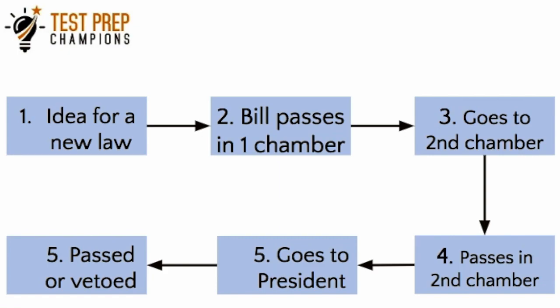On the other hand, if a citizen takes their idea to their representative instead, that representative would introduce the bill into the House of Representatives. There'd be debate and a vote, and if the majority of representatives vote in favor, it would then go on to the Senate. So the key idea is that someone gets an idea for a law, takes it to either a senator or representative, and the bill must pass through both chambers — the Senate and the House.